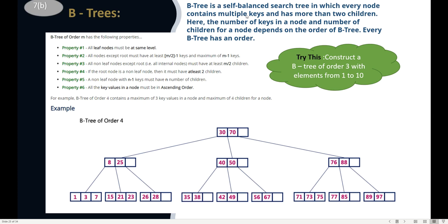B-trees are self-balanced search trees in which every node contains multiple keys and has more than two children. Unlike a normal binary search tree where each node has only one element, in a B-tree each node can have two or three elements depending on the order. I have given the properties for a B-tree of any order m, and shown a B-tree of order 4 where a node has three elements. Try constructing a B-tree of order 3 with elements from 1 to 10 and let me know in the comments.